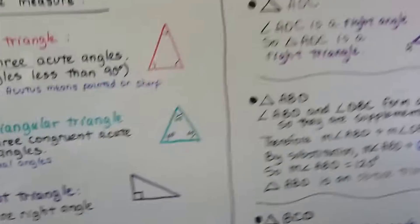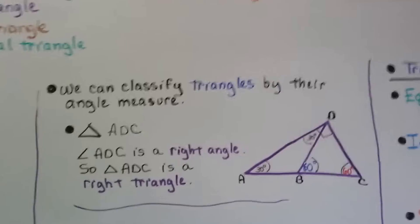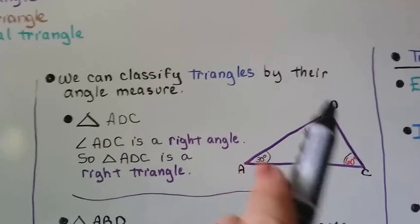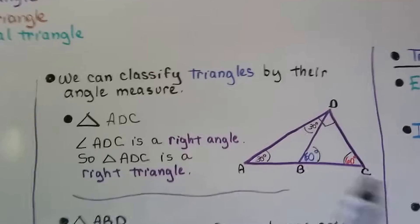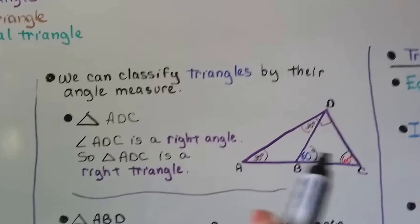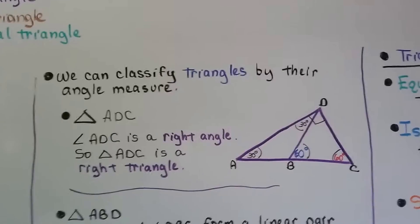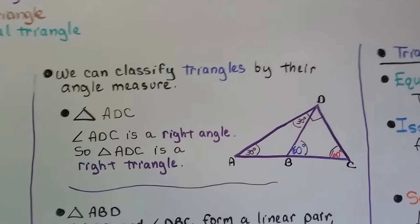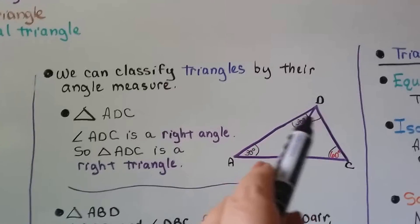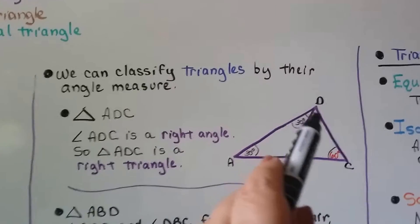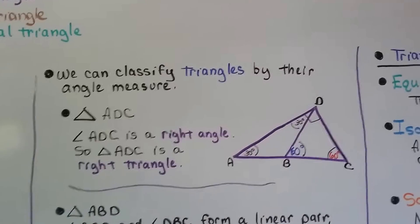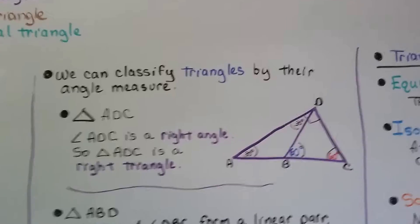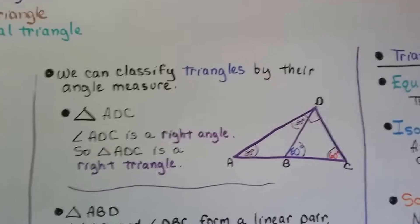We can classify triangles by their angle measure. Here we have triangle ADC — that's the whole triangle containing both of the inner ones. Angle ADC is a right angle, so triangle ADC is a right triangle because it contains a right angle.